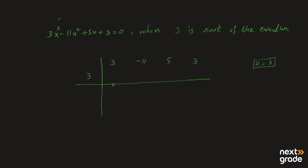First value as it is نیچے آ جائے گی، یعنی 3۔ اب یہ value اس number کے ساتھ multiply ہوگی: 3 × 3 = 9، وہ یہاں لکھیں گے۔ minus 11 plus 9 equals minus 2۔ minus 2 کو 3 سے multiply کریں گے تو minus 6 آئے گا جو 5 کے نیچے لکھا جائے گا، minus 6 plus 5 equals minus 1۔ پھر minus 1 کو 3 سے multiply کریں گے تو minus 3 آئے گا، plus 3 plus (minus 3) equals 0۔